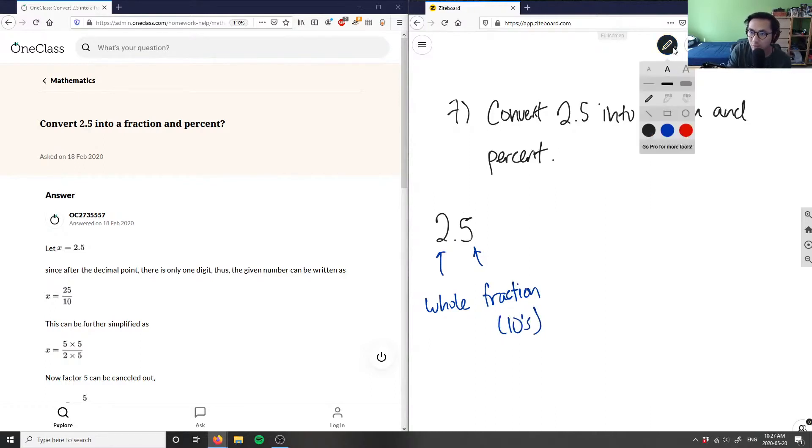I can rewrite this as a mixed fraction: 2 as the whole part, then the denominator is 10 for the tens digit in the decimal, and the numerator is simply just whatever is in the decimal, so in this case it's 5.